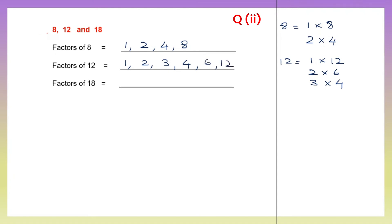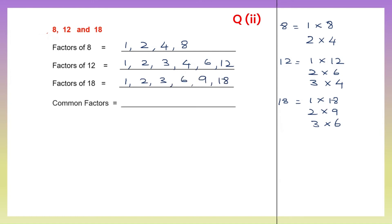Now let's find the factors of 18. The factors of 18 will be: 1 into 18 is 18, then 2 nines are 18, and 3 sixes are 18. So the factors of 18 are 1, 2, 3, 6, 9 and 18. Now we have to pick the common factors which have to be common to all three numbers.